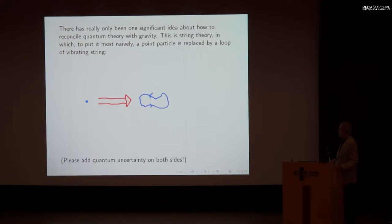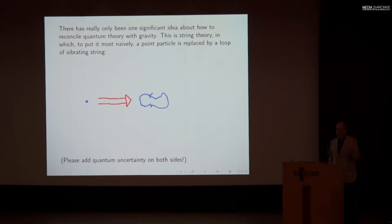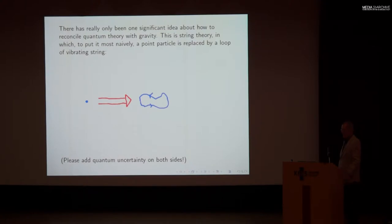This dot symbolizes a point particle, and I've replaced it with a little loop of string. But there's something a little misleading about such a picture — you have to add quantum uncertainty on both sides. I have no idea how to draw quantum uncertainty, so I didn't. Just in your mind's eye, you have to imagine that everything is fuzzy in a way that we can't see with our classical minds. The electron is fuzzy and the string is fuzzy, quantum mechanically.